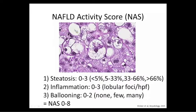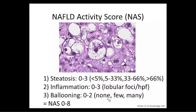Here is a picture of macrovesicular steatosis — large droplet steatosis, not the small droplet steatosis seen intracellularly, which is more associated with mitochondrial dysfunction and drug-induced liver injury. Inflammation is graded by foci per high-powered field. Ballooning is perhaps the most important feature. Kleiner, a pathologist from the NIH who developed this scoring, only graded ballooning zero to two: none, few, and many. Here's a picture of a ballooned hepatocyte — you can see derangements in cytokeratin, scalloped edges, and Mallory-Denk bodies.